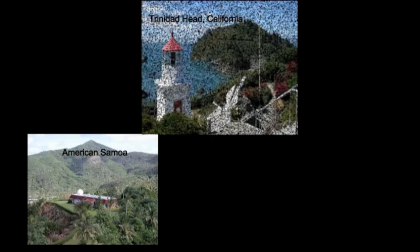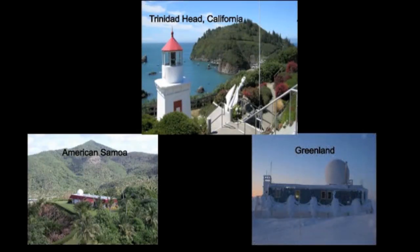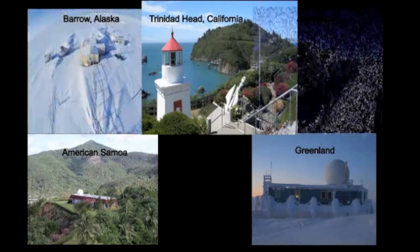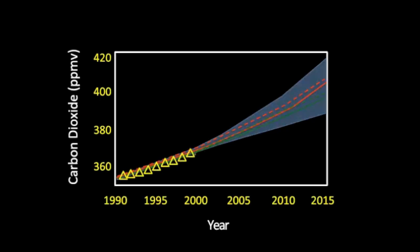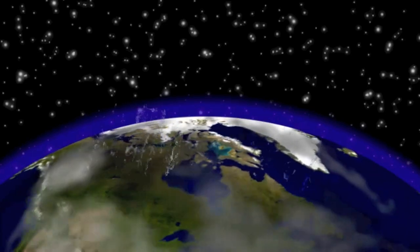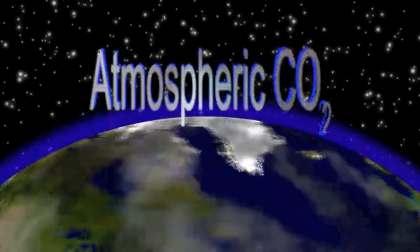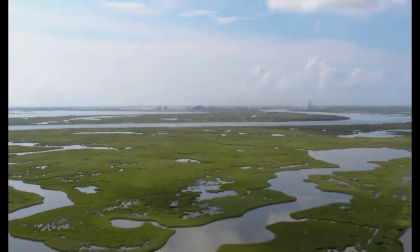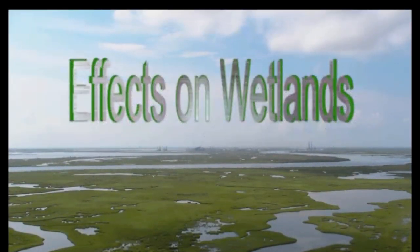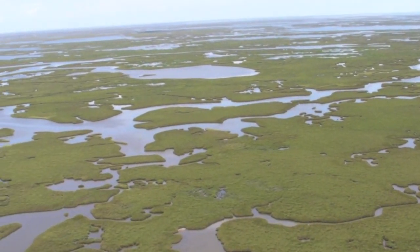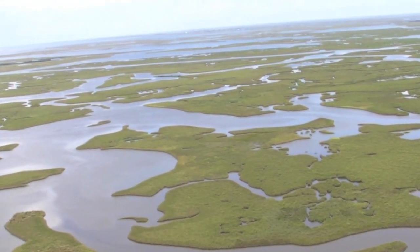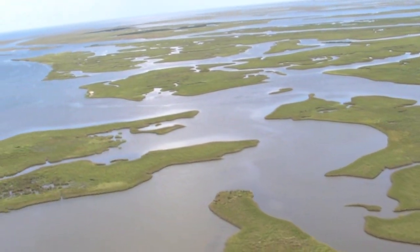Independent, high-precision measurements made at a number of monitoring stations around the world show that CO2 has continued to rise in modern times at increasingly rapid rates and will likely continue to increase well into the future. Scientists are interested in both direct and indirect effects of higher CO2 concentrations on the Earth's ecosystems. In this video, we'll take a closer look at what this change might mean for coastal wetlands and some of the difficulties inherent in making predictions about what those effects might be.